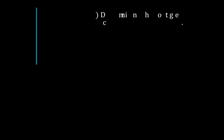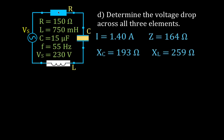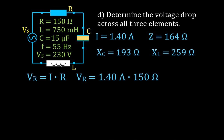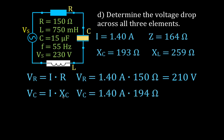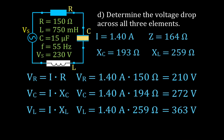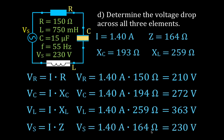Now we find the voltage drops across all three elements using Ohm's law. For the resistor: V = I × R = 210 volts. For the capacitor: V = I × XC = 272 volts. For the inductor: V = I × XL = 363 volts. As a confirmation, using V = I × Z should return 230 volts, which matches our source voltage.